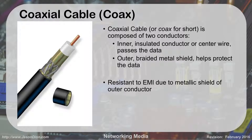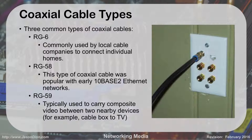There are three types of coax cables, defined basically by the thickness of the cable and the connector on the end: RG6, RG58, and RG59. RG6 is commonly used by your local cable company to connect individual homes — the line that runs into your house from the service rider. RG58 was popular in early 10Base2 Ethernet networks — very slow at only 10 megabits per second, with a range of about 185 meters. RG59 was typically used to carry component video between nearby devices, like from your cable box to your TV.